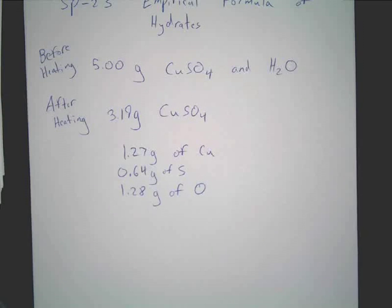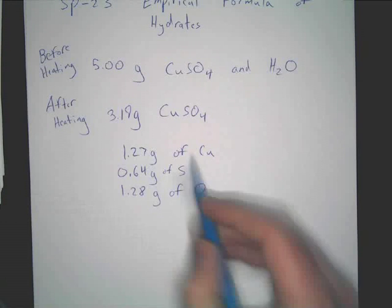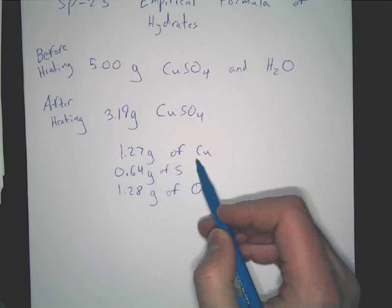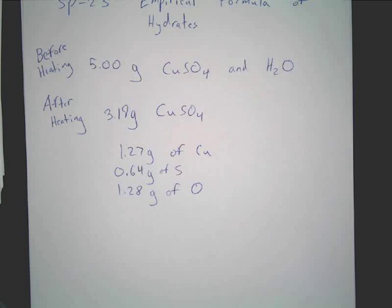To do this, there are the same exact steps as the empirical formula, with one exception: you're going to figure out the mass of water too. You've got 1.27 grams of copper, sulfur, and oxygen — you need water's mass as well, because you're going to find the ratio of water molecules to one copper sulfate molecule.